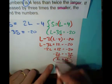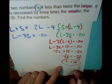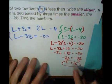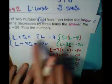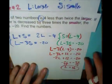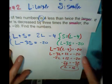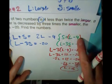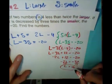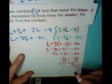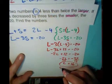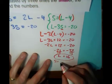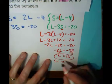So our larger of the two numbers is 16. We can substitute this into the easiest equation, S equals L minus 4, which gives 16 minus 4. So S equals 12.